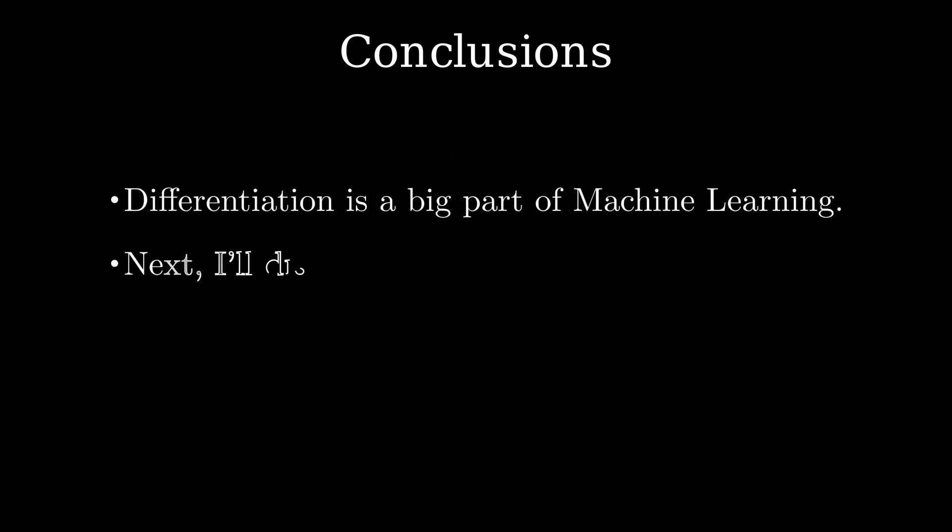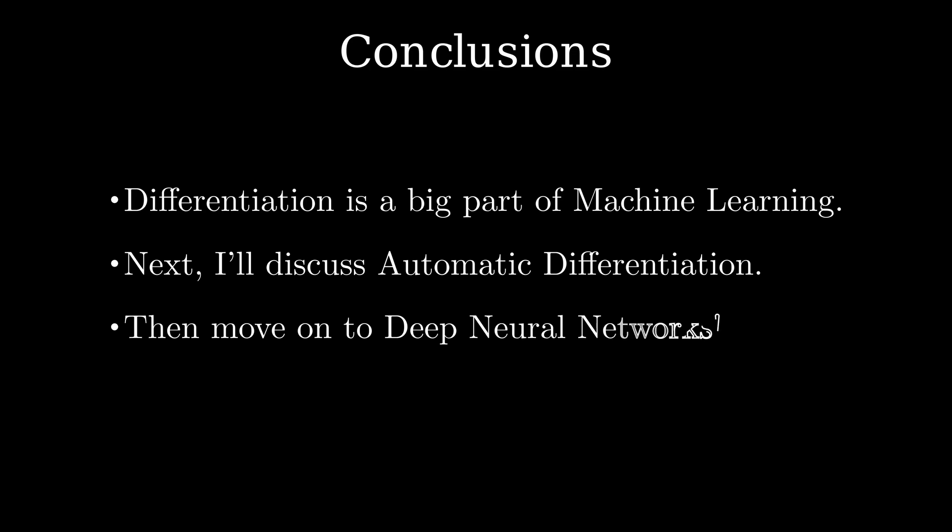Differentiation is a big part of machine learning. Hence in the next video, I'll discuss a way by which a computer can differentiate any function automatically. This is known as automatic or algorithmic differentiation. I'll then move on to discussing deep neural networks that is the backbone of most of the things that we hear about in today's world.